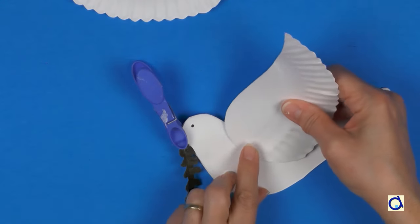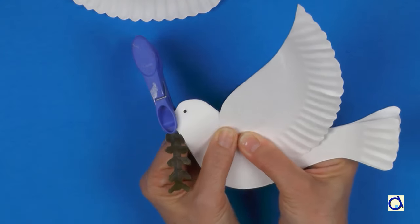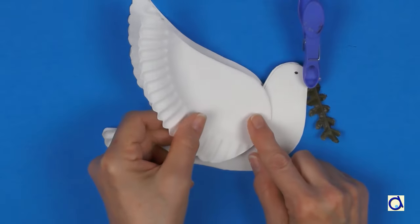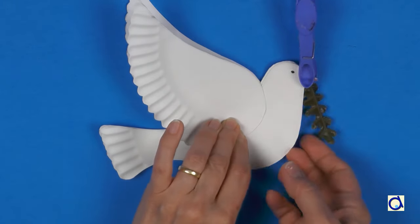Glue the wings on either side of the body and hold them in place until the wings stay in place by themselves. And there you have the complete dove!